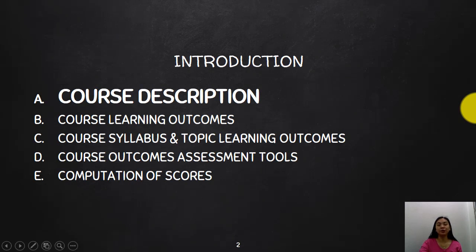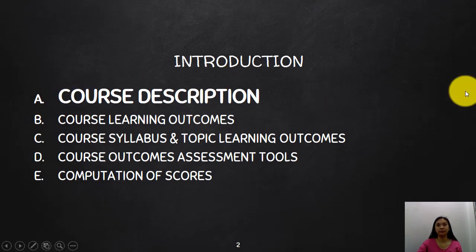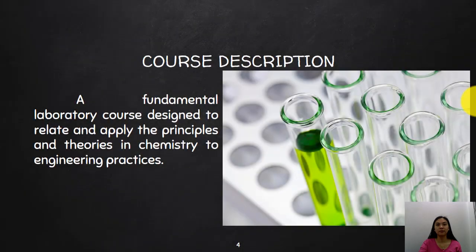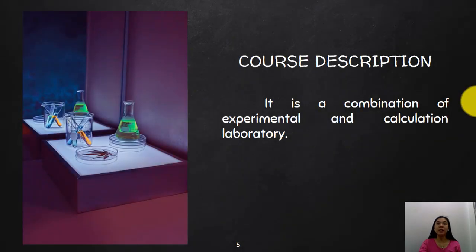We will be covering five topics for this introduction. Let us first start with the course description. This is a fundamental laboratory course designed to relate and apply the principles and theories in chemistry to engineering practices. It is a combination of experimental and calculation laboratory, so expect that you will do a lot of calculation and basic algebra whenever you are trying to calculate the results of an experiment.